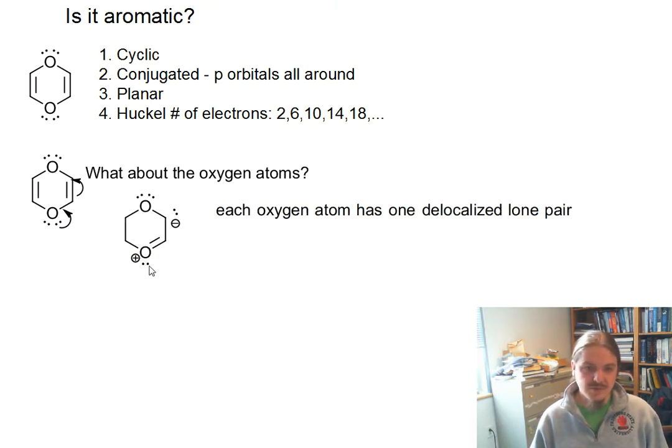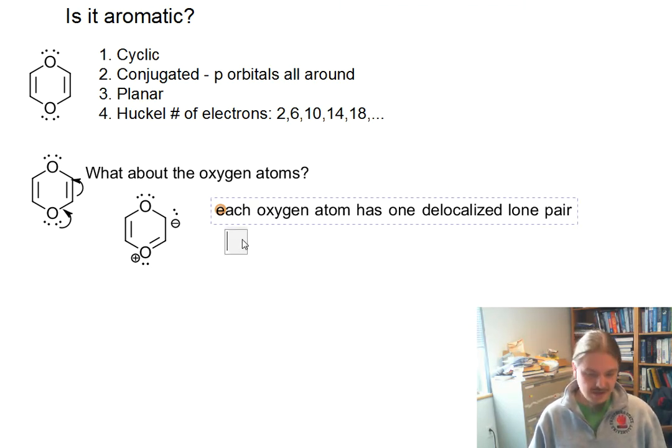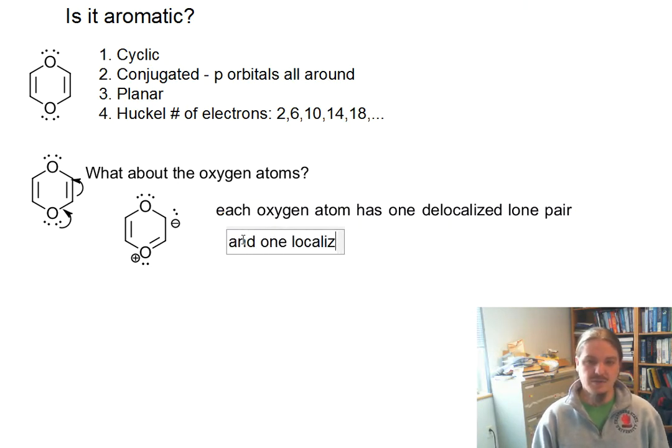And so actually each oxygen atom has one delocalized lone pair. Not two, right? So when we start drawing resonant structures, we only move one around. The other one stays on that oxygen, and you will find it hard to move that around. In the next video of the series, I'm going to compare pyridine and pyrrole, which is an interesting comparison. And we'll talk a little bit more about how we can recognize localized and delocalized lone pairs in that video.